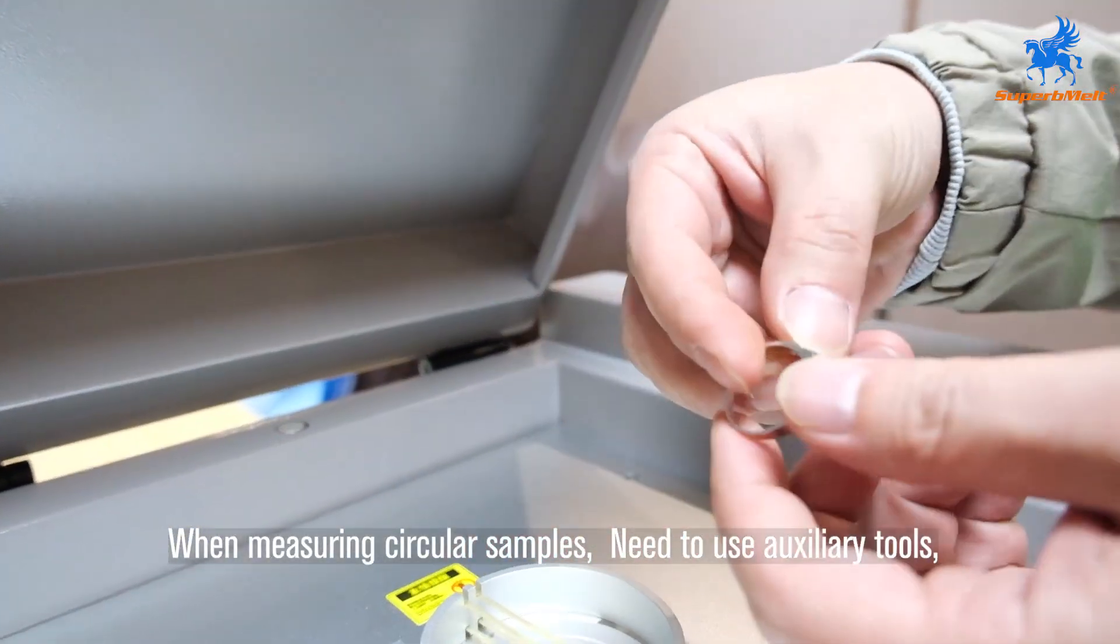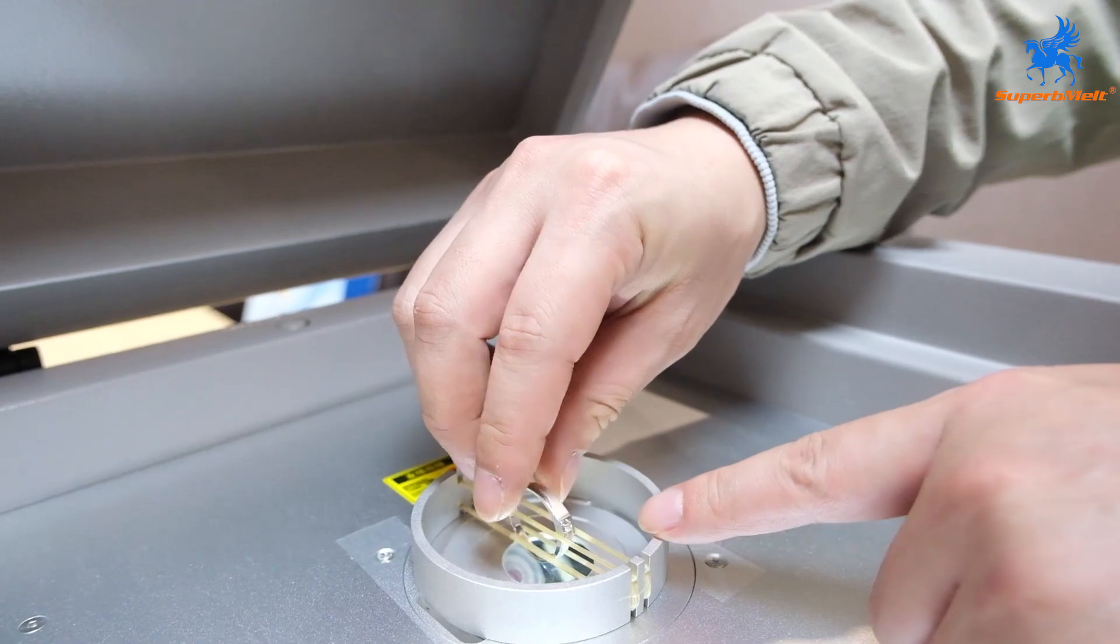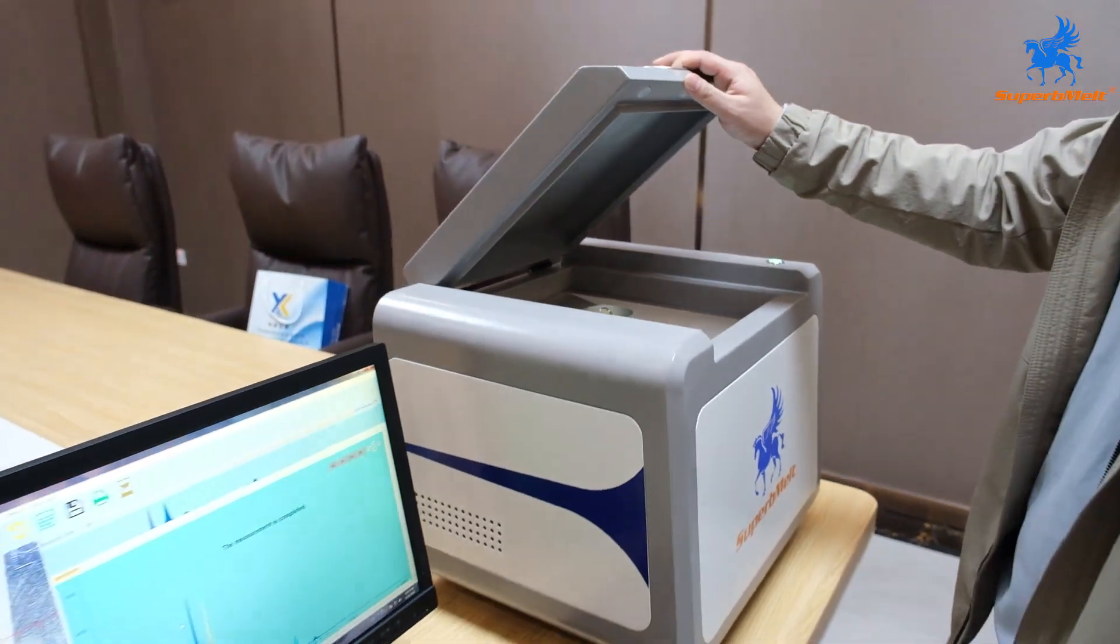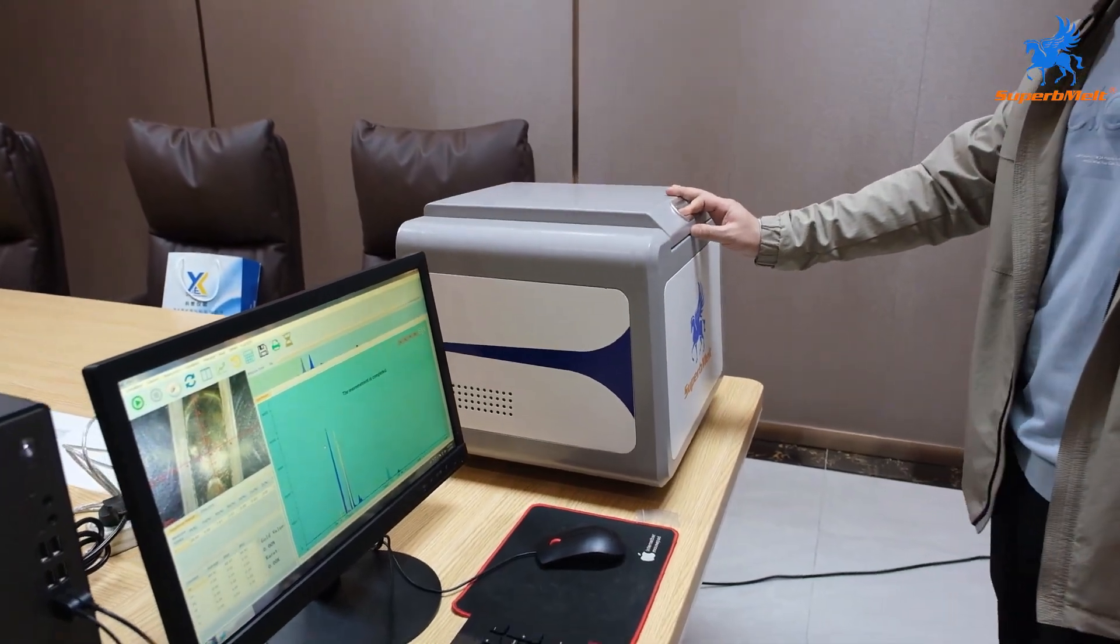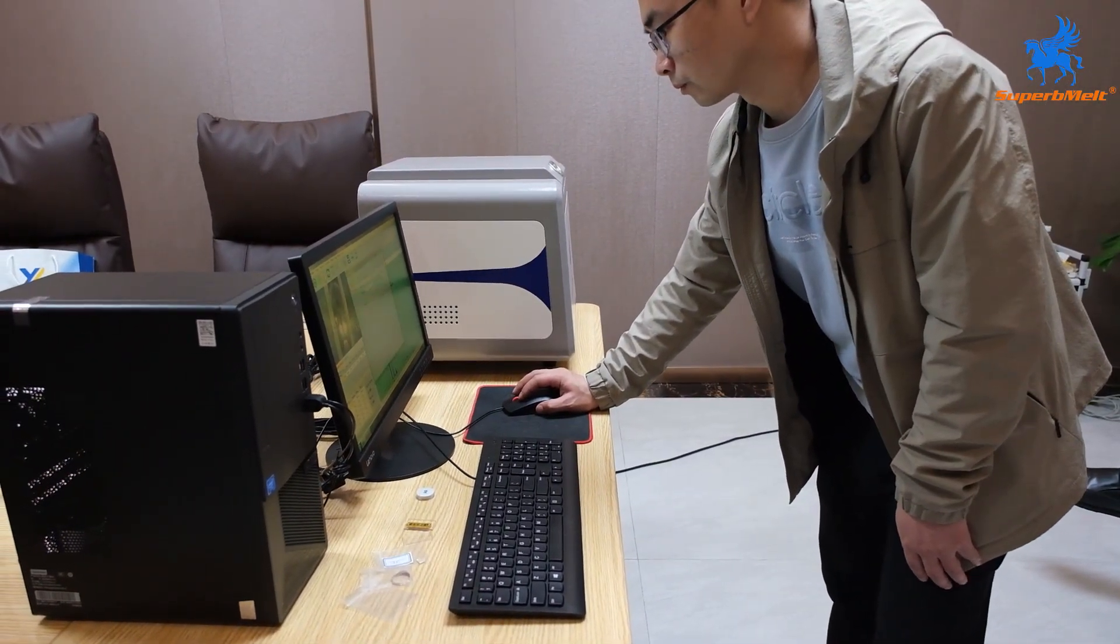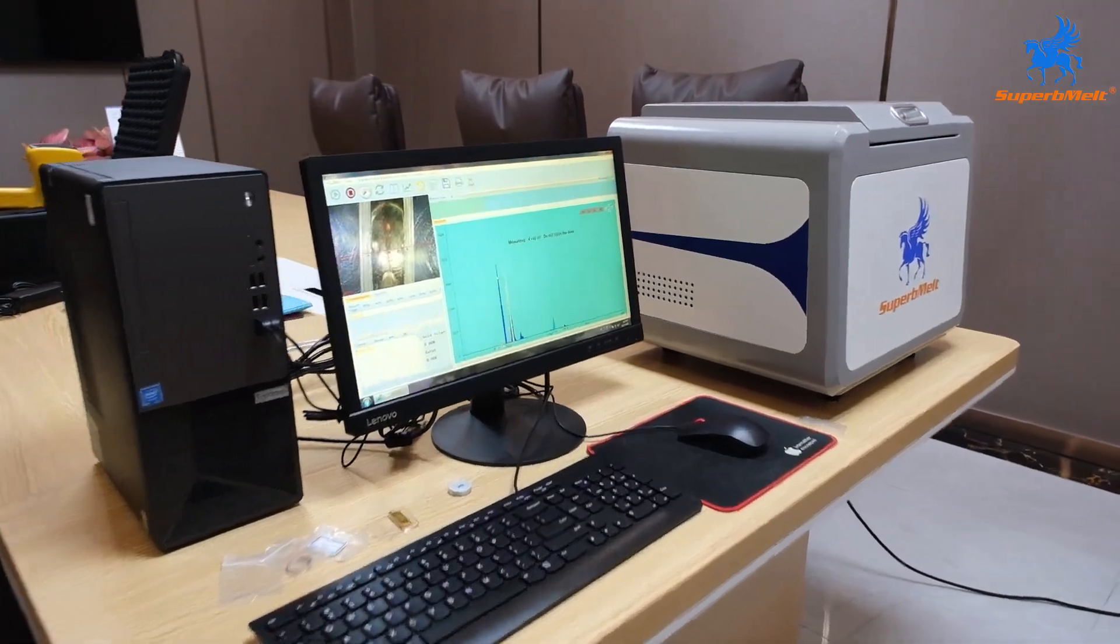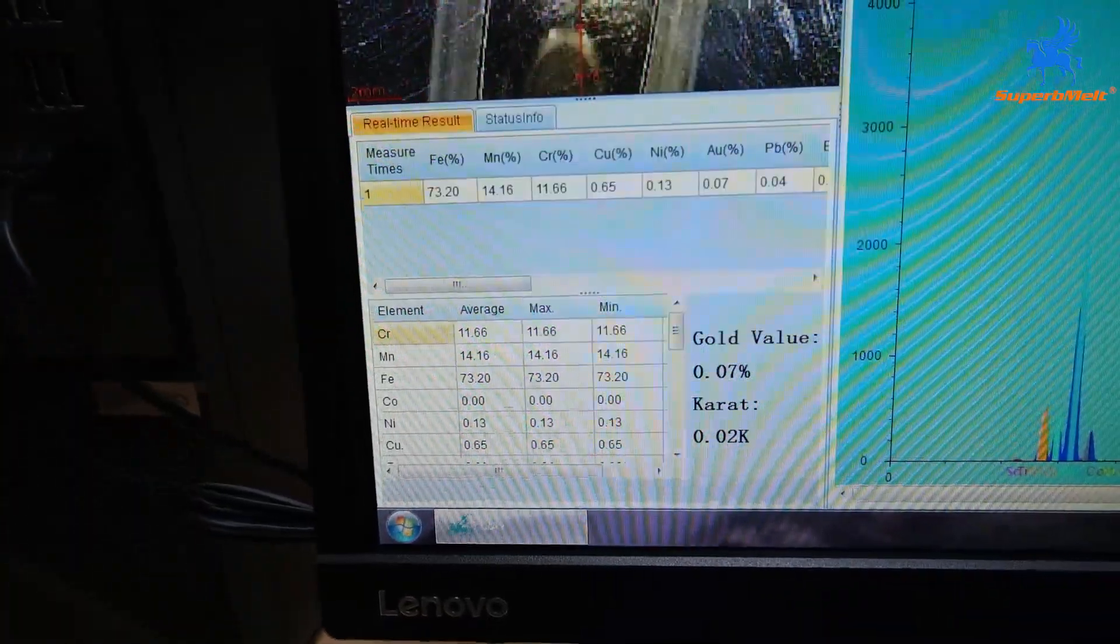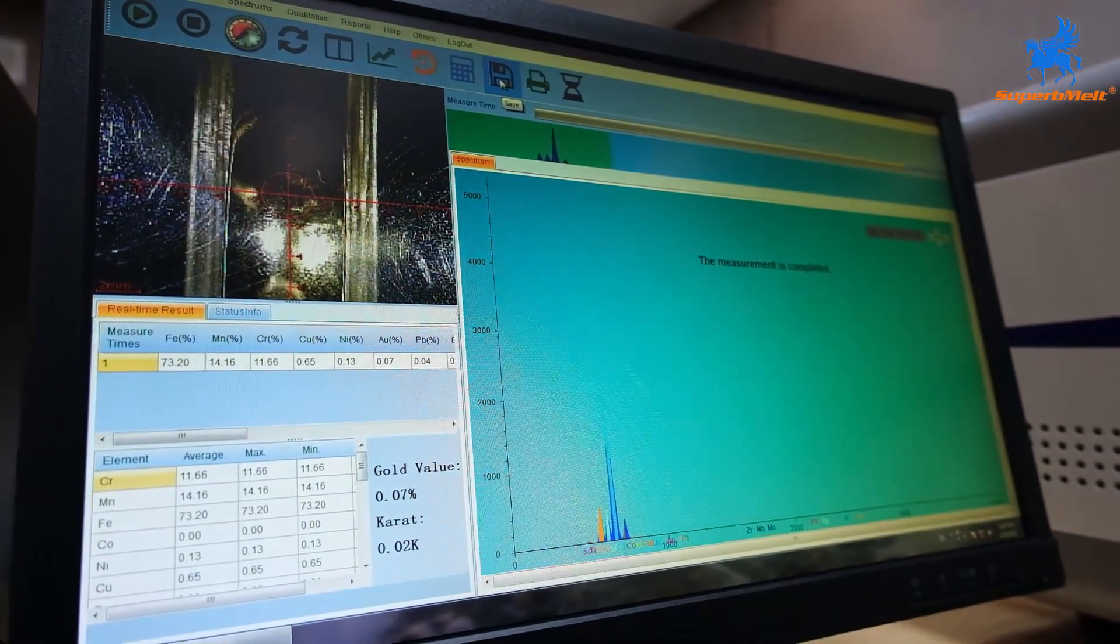When measuring circular samples, need to use auxiliary tools. The results of this measurement show that the gold content is only 0.07%. It can be judged to be a fake gold-plated ring.